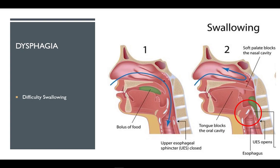With dysphagia, any number of problems can go wrong and interfere with normal swallowing function. Our biggest concern is food or drink aspirating into the trachea and lungs, which can lead to pneumonia. In susceptible populations like the elderly and young children, pneumonia can be deadly.